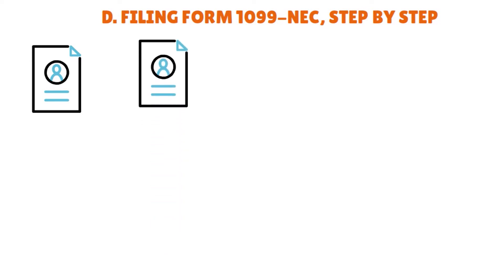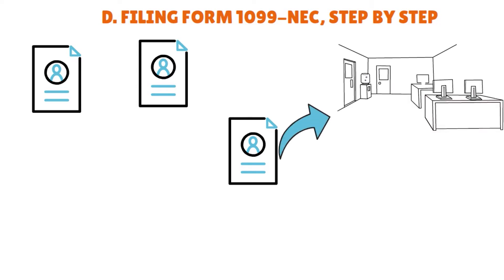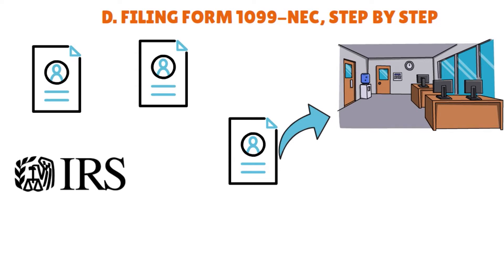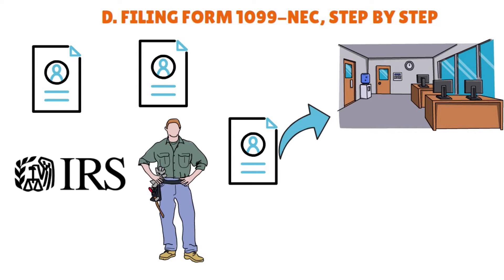If you hire an independent contractor, you must report what you pay them on Copy A and submit it to the IRS. You must report the same info on Copy B and send it to the contractor. If you are an independent contractor and receive Form 1099-NEC Copy B from a client, you don't need to send it to the IRS — you report the income listed on Copy B on your personal income tax return. You also send Copy 1 to state tax authorities.